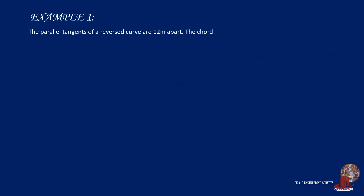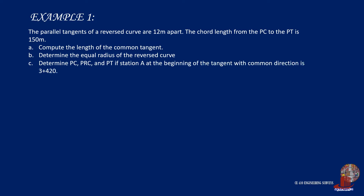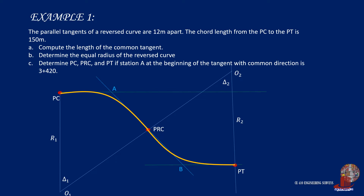Example 1: The parallel tangents of a reverse curve are 12 meters apart. The chord length from PC to PT is 150 meters. (A) Compute the length of the common tangent. (B) Determine the equal radius of the reverse curve. (C) Determine stations of PC, PRC, and PT if station A at the beginning of the tangent is 3+420. This problem involves an equal radii reverse curve with parallel tangents, where point A is the vertex of the first curve stationed at 3+420.